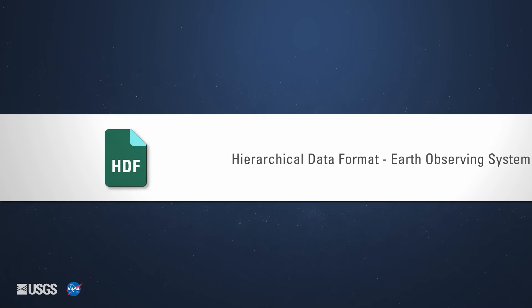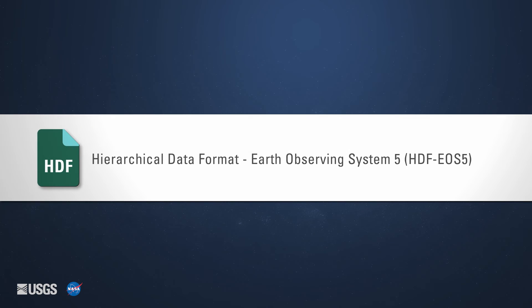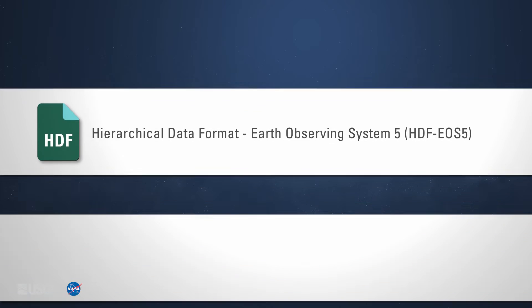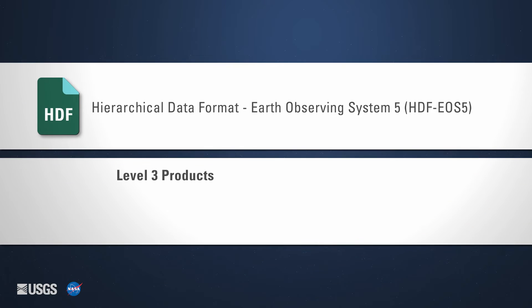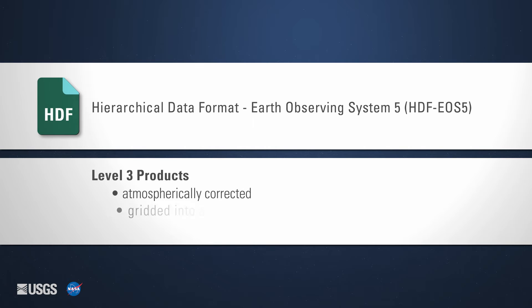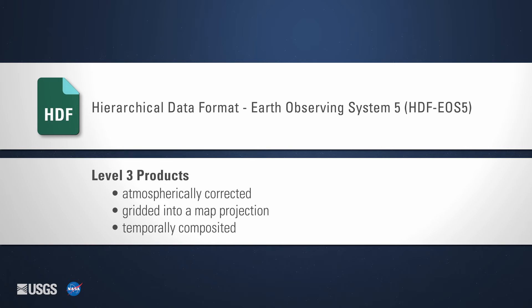VIIRS data are distributed as Hierarchical Data Format Earth Observing System 5, or HDF-EOS 5, products. The VIIRS surface reflectance products are Level 3 products, meaning they have been atmospherically corrected, gridded into a map projection, and temporally composited.